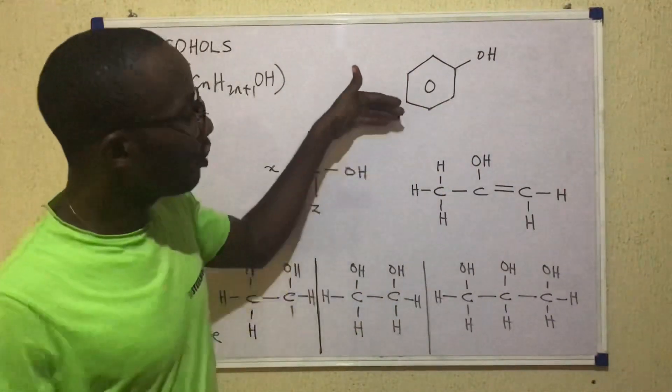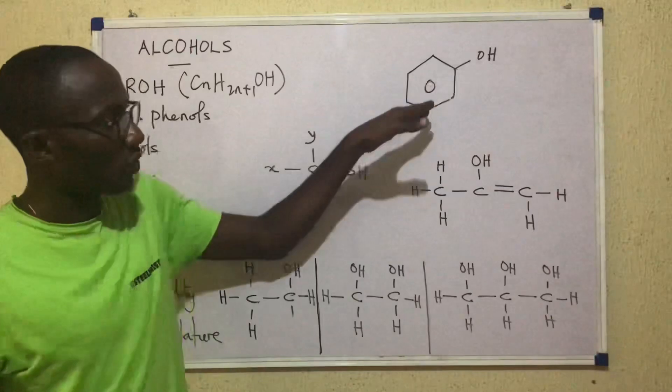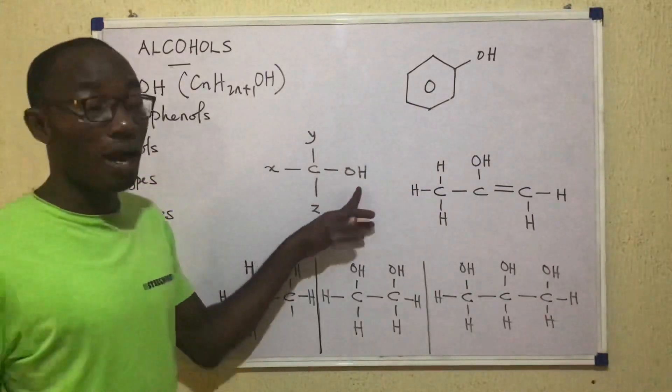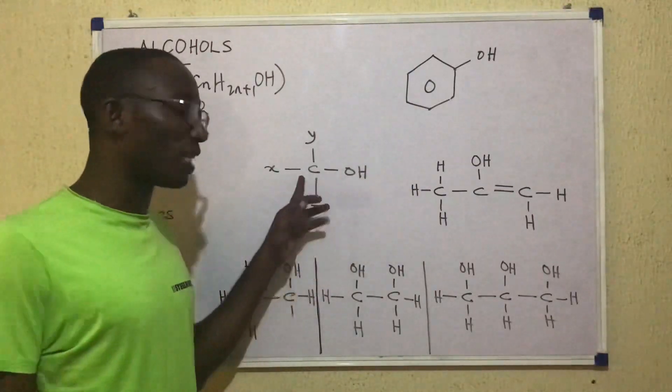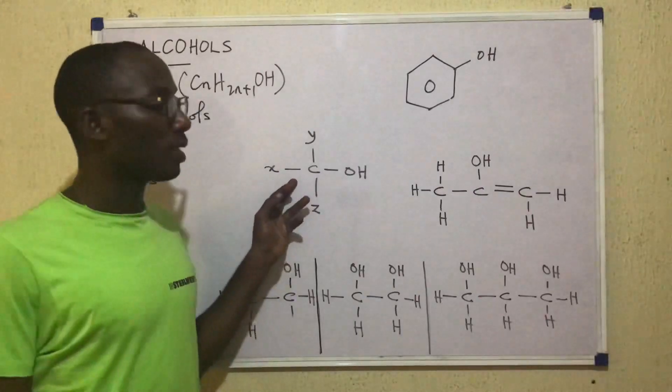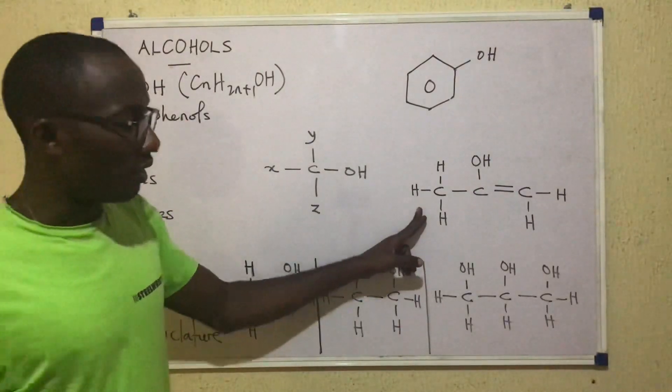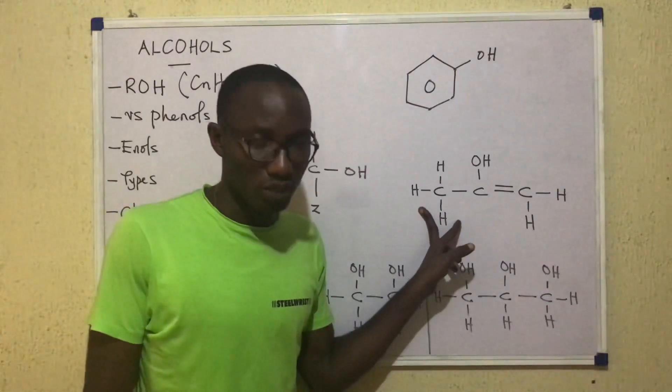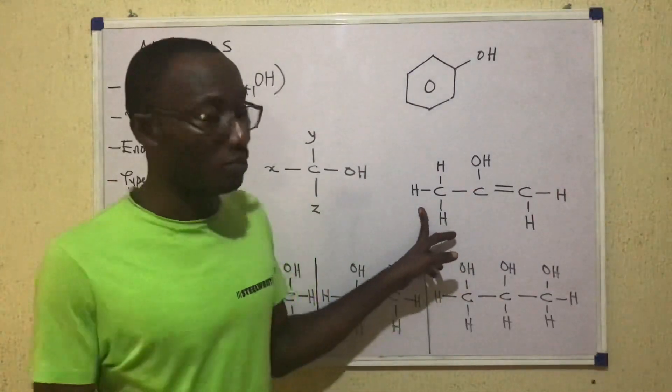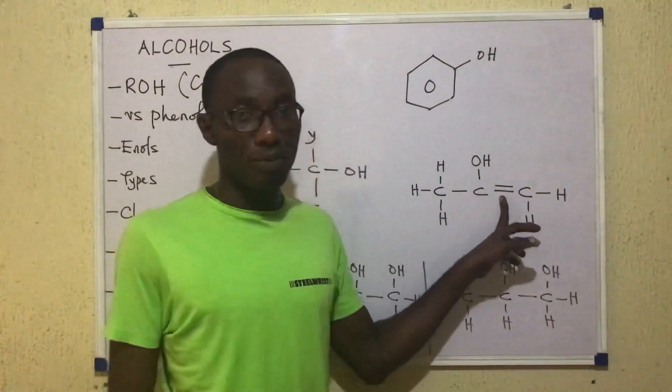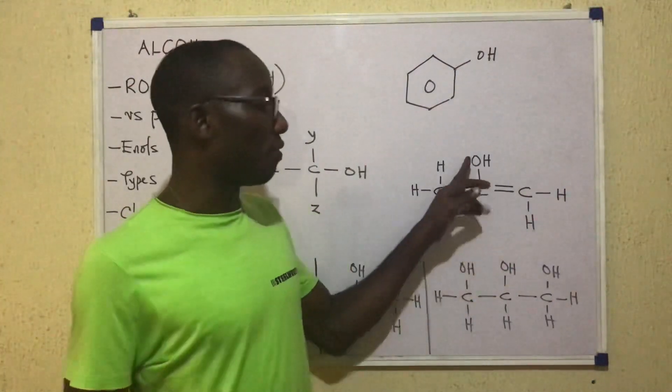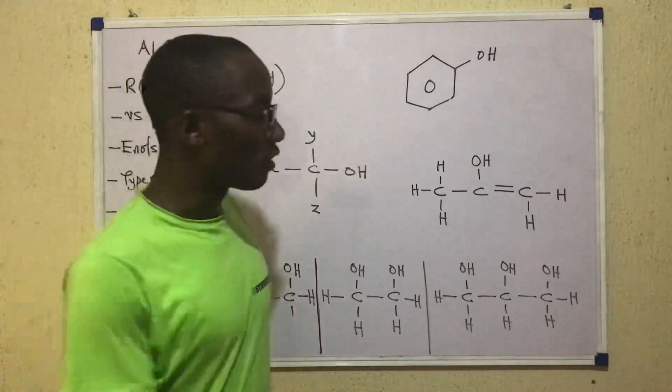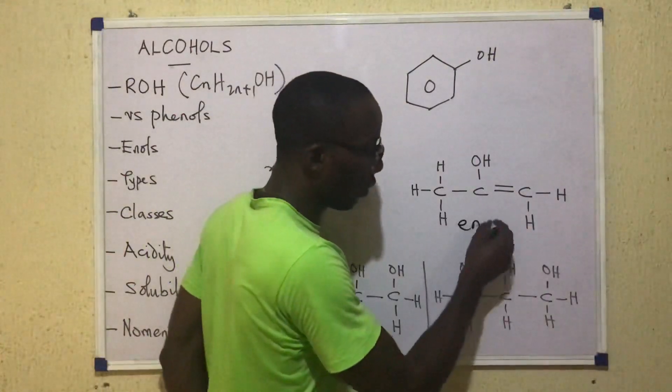Then having shown that phenols have their OH on aromatic rings whereas alcohols have their OH on aliphatic chains, see this compound. This kind of compound is called an enol. Enols are bifunctional. That is, they have two functional groups and the two functional groups you are seeing here are the carbon to carbon double bond, and then the OH group. So for that we call them enols.